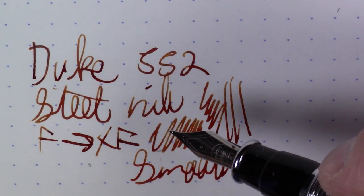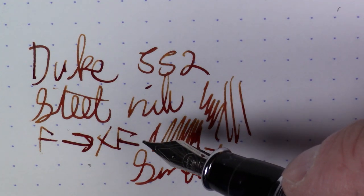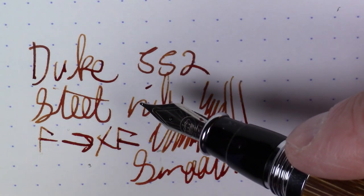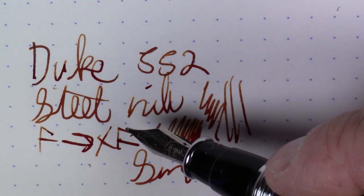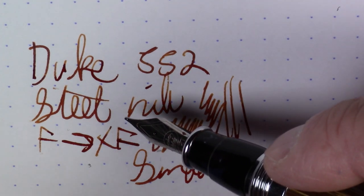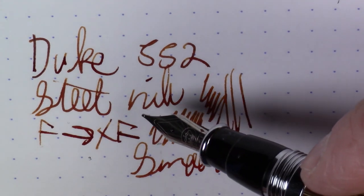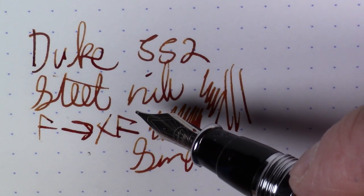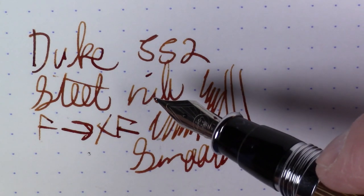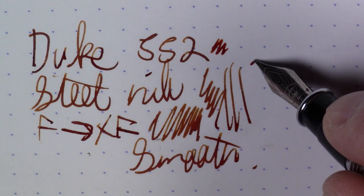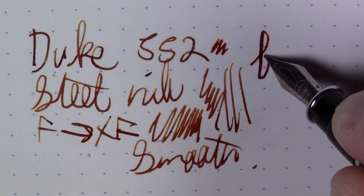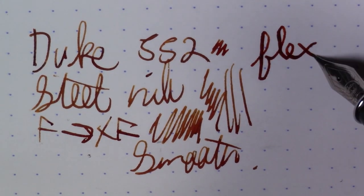I say it all the time, but it really holds true for these inexpensive Chinese pens. What I did with this pen and what I do with all of them that you can do this on is pull the nib and feed, wash it in some soapy water, rinse it off, dry it off, put it back in before you even ink it up for the first time. You'll just save yourself a lot of headaches if you do that. It's definitely a stiff nib, so we're not really going to get any flex here.